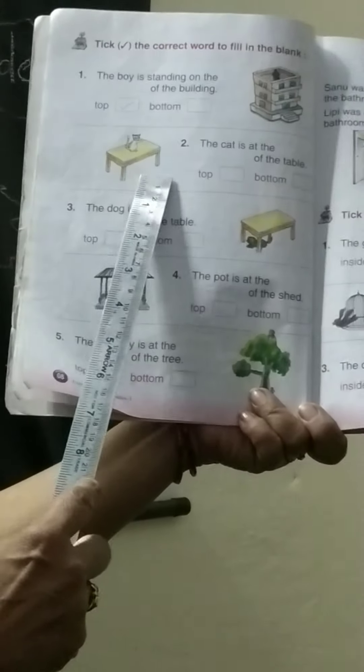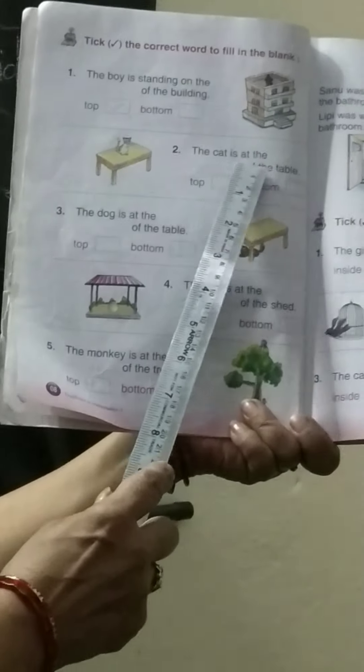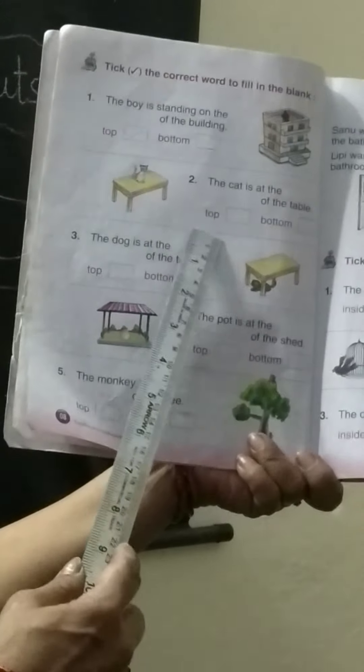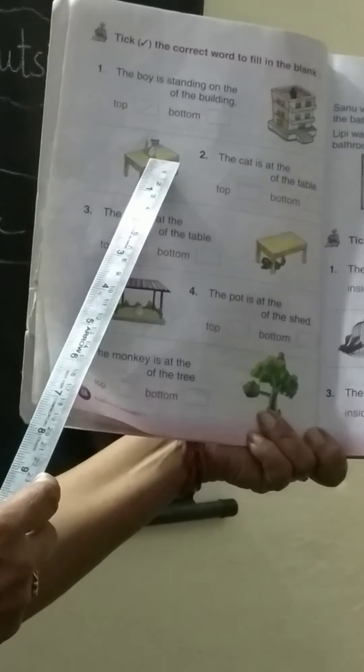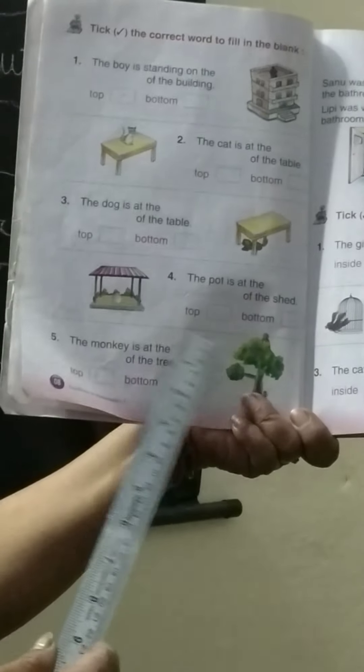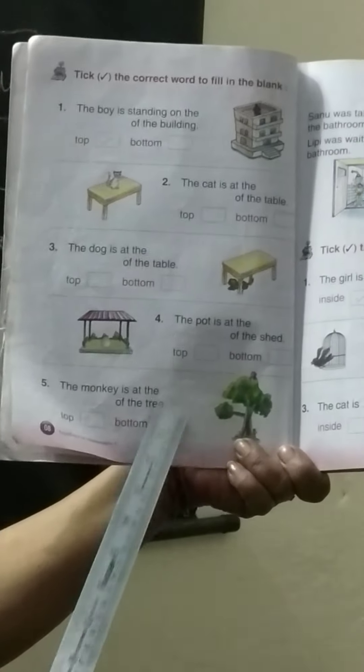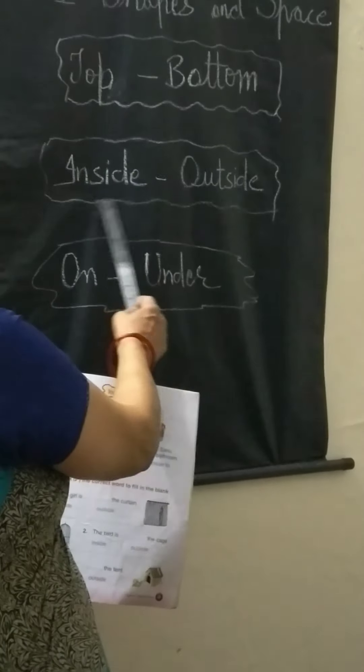In the next picture, the cat is at the dash of the table — table ki kaha pa hai? Upar ya neechhe? Seeing the picture, it is at the top. So you have to put a tick right on the top. Similarly, we put a tick right by seeing the pictures.